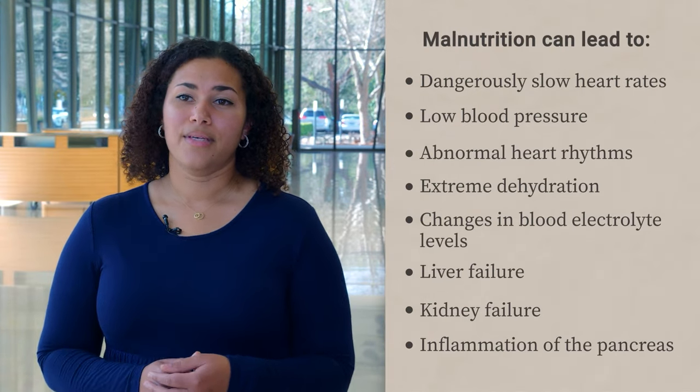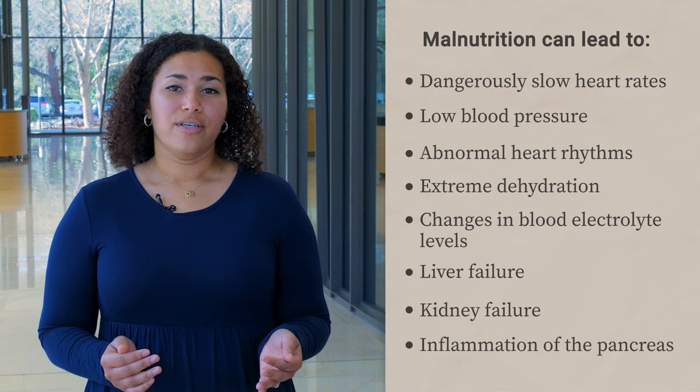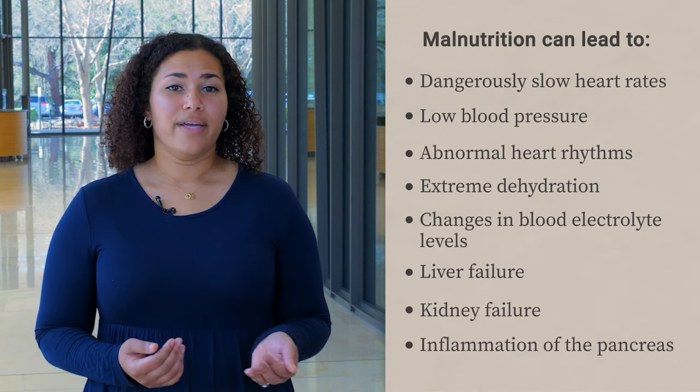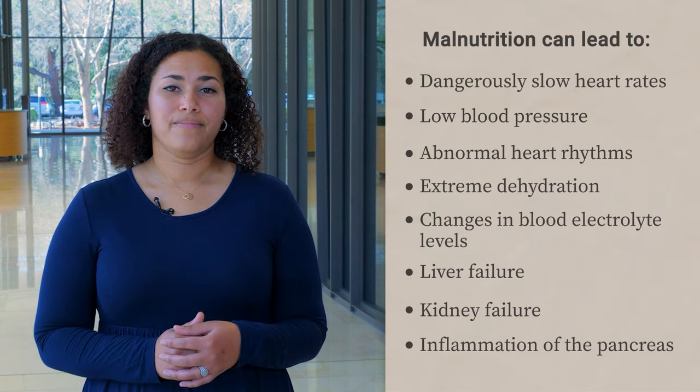Anorexia has one of the highest mortality rates of all mental illnesses, and medical complications for malnutrition account for over half of those deaths. Jay's case shows what can happen to the body under the stress of malnutrition from anorexia. Malnutrition can affect any organ system, but the most serious complications affect the cardiovascular system, as we see in Jay's case. Patients can develop dangerously low heart rates, low blood pressure, and abnormal heart rhythms. Malnutrition can also lead to extreme dehydration, changes in blood electrolyte levels, liver failure, kidney failure, and inflammation of the pancreas. These severe complications can be lethal.